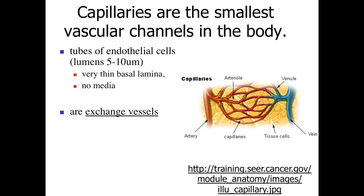After the arterioles, we get to the exchange mechanism — the capillaries. These are the smallest vascular channels within the body, essentially tubes of endothelial cells. We're not going to have the tunica media or tunica adventitia — no muscle cells, none of that dense connective tissue. What we have is simple squamous endothelial cells wrapped very thinly to allow a thin barrier that keeps things within the bloodstream, allows diffusion across the lining, and allows materials from the surrounding tissues to diffuse back in.